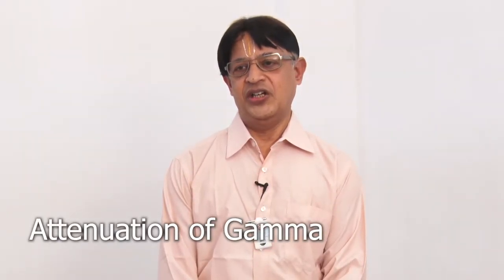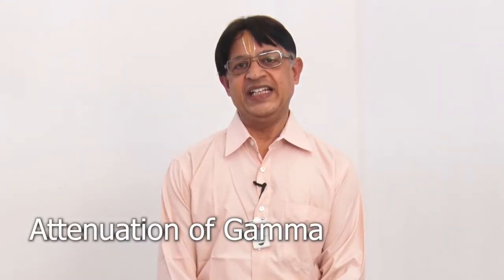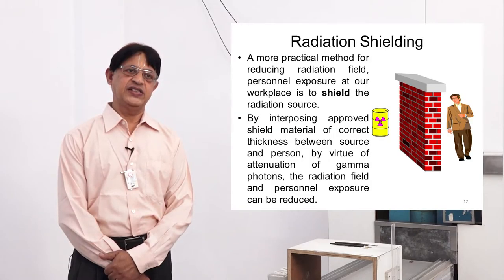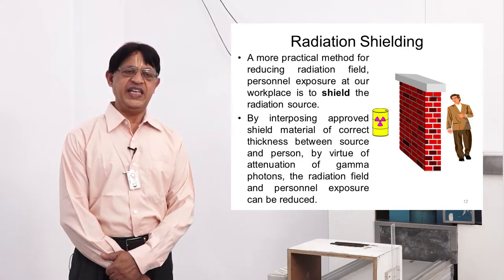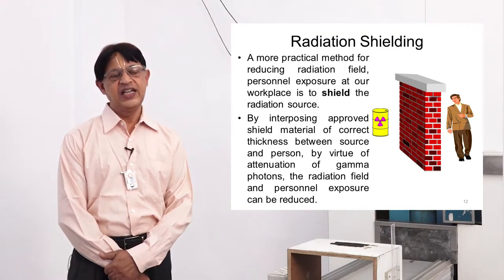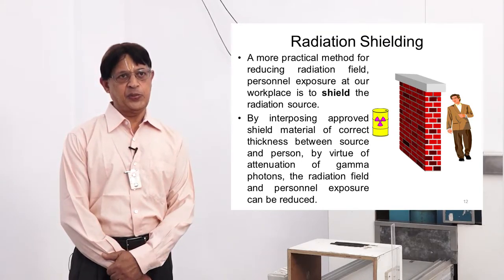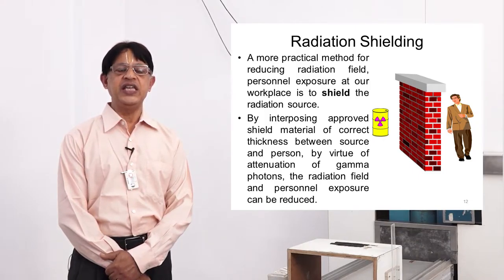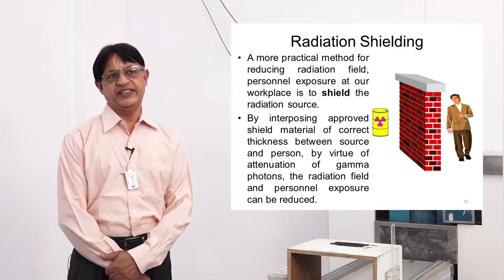Participants, we are into the second leg of the experiments. We are going to understand the attenuation properties for gamma radiation field by materials which are interposed — this can also be said as a shielding material — the materials interposed between the source and the human subject.